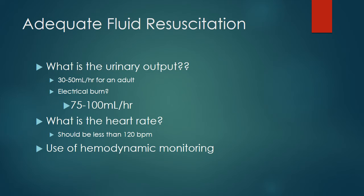To summarize: we determine adequate fluid resuscitation by urinary output and a heart rate less than 120. You'll be responsible for the Rule of Nines — 11 areas of the body worth 9% each, plus 1% for the genitalia area. I hope this helps and serves as a good review for your exam on tissue integrity. Thank you.